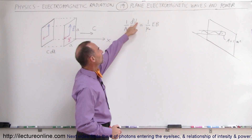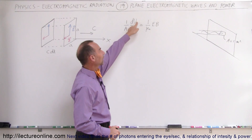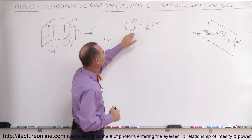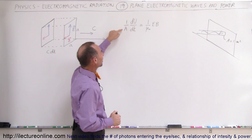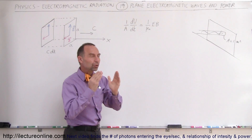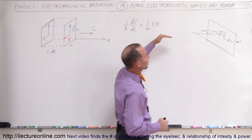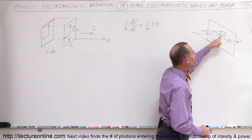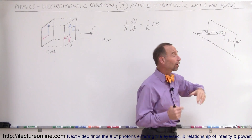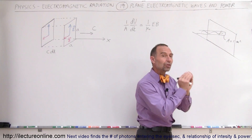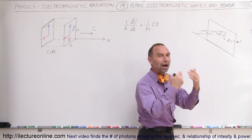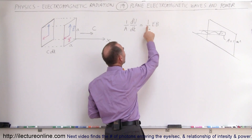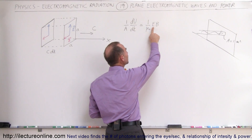The amount of energy deposited per unit time — where U stands for energy contained in a certain volume of electromagnetic radiation — divided by the area, meaning deposited per unit area. We have some radiation hitting a wall, for example, and we take just a unit area of that, which is one square meter. The amount of energy per unit time deposited there is the power deposited per unit area, equal to 1 over mu sub naught times E times B.